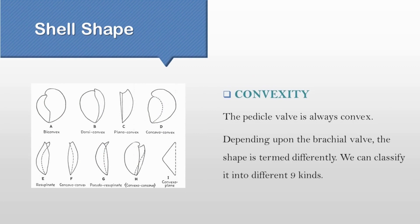Convexity. Among them, the pedicle valve is always convex, but the convexity of the brachial valve can be classified in nine different profiles. These can be convex or concave, concave or convex, convex or plane, planoconvex, biconvex, etc.